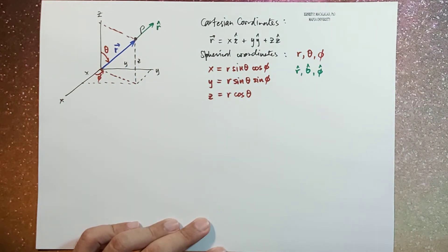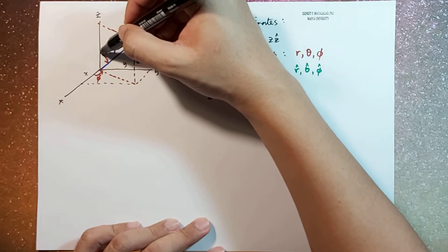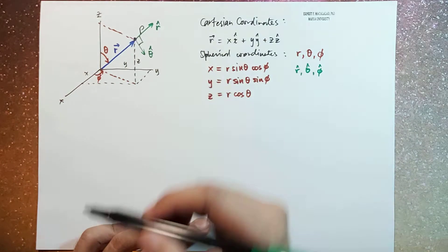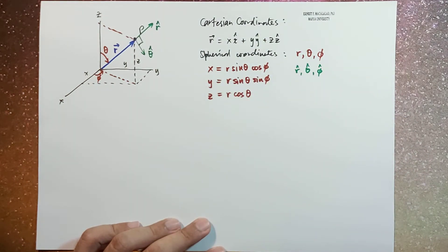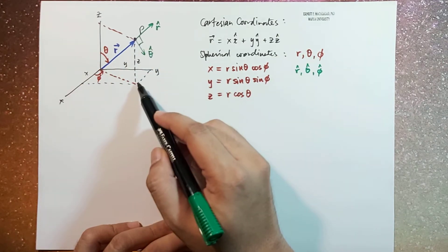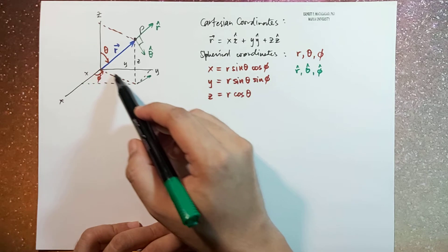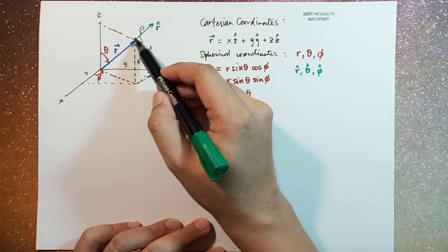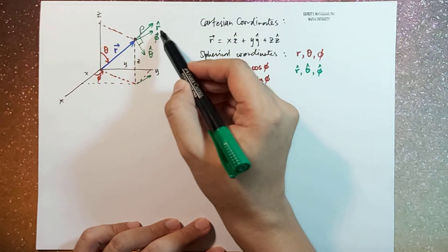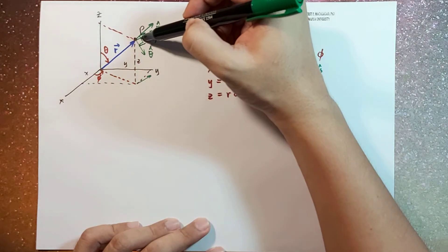Theta-hat is perpendicular to r along the direction of this angle, so they are perpendicular to each other. And then phi-hat, if we're going to project phi-hat in the xy-plane, is perpendicular to this line, so that means this would be in this direction. R-hat, phi-hat, and theta-hat are mutually perpendicular to each other.